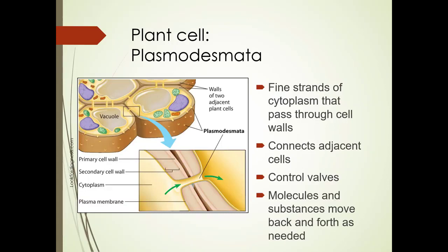Plasmodesmata are fine strands of cytoplasm that pass through the cell walls. They connect adjacent cells and control valves so molecules and substances can move back and forth as needed.